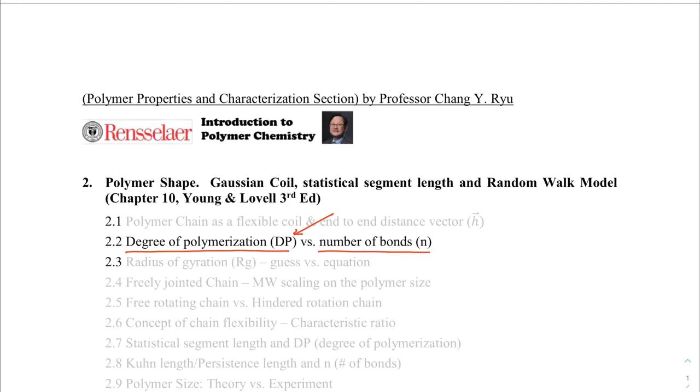Degree of polymerization is number of repeating units. And the number of bonds is essentially number of carbon-carbon bonds. So this bond is number of carbon-carbon bonds, and this is a small n. And we call degree of polymerization a DP. Also, sometimes in many of the textbooks, they are using capital N compared to the lowercase n for the number of bonds.